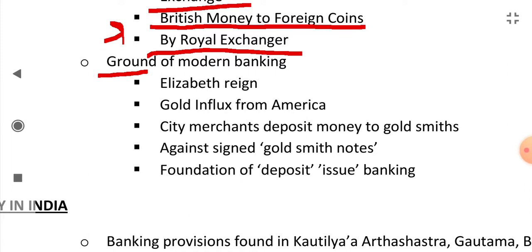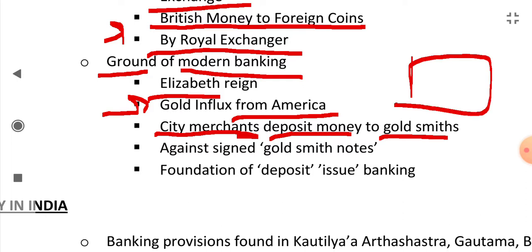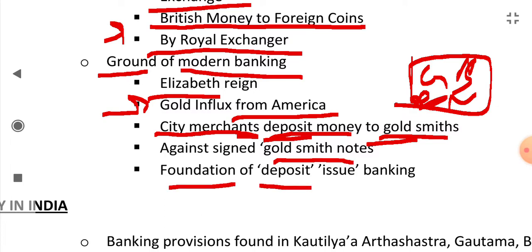The ground of modern banking was laid down during the reign of Elizabeth, because of the influx of gold from America. There was a lot of gold coming from America, so city merchants and business people started depositing their money with goldsmiths. In return, goldsmiths gave them goldsmith notes and signed them. This led to the foundation of deposit and issue banking.